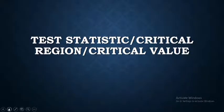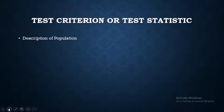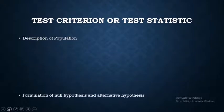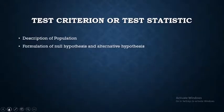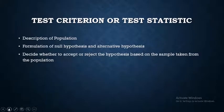Today we will be learning about test statistic, critical region, and critical value. A statistical test procedure starts with the description of the population, and afterwards we formulate the null and alternative hypothesis.